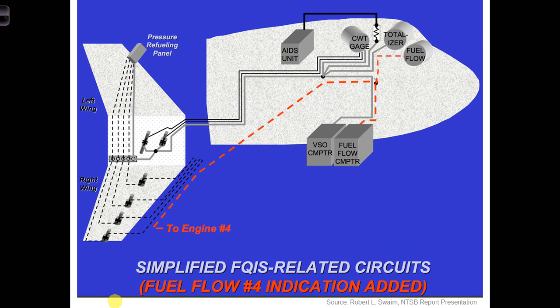Here's a final image relating to TWA 800. It shows the electrical connections between the fuel tank, the cockpit, and, as indicated by the red dashed line, a connection to engine number four. From the investigation into the crash, another piece of information we have is that the pilot reported a strange level of fuel flow to engine number four about 2.5 minutes prior to the explosion. This hints at some issue with either the probes or electrical components associated with monitoring of the fuel flow.